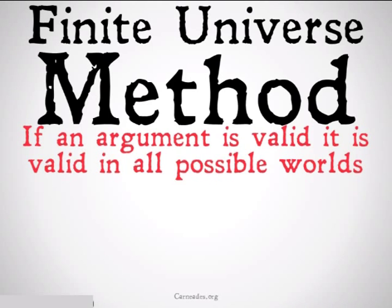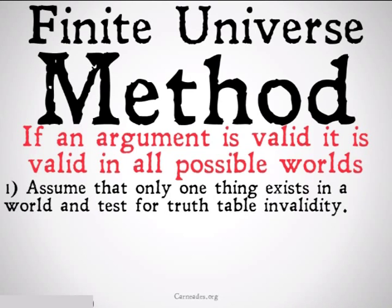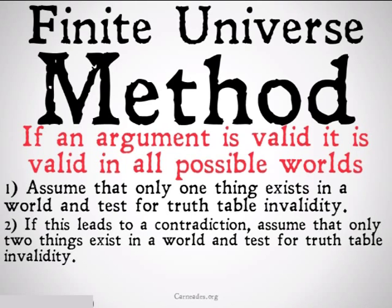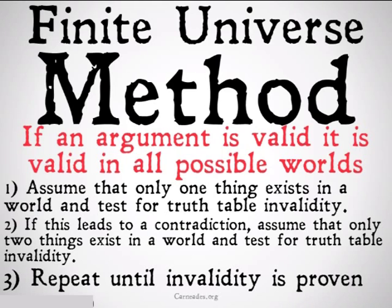The finite universe method is based on the idea that if an argument is valid, it's going to be valid in all possible worlds — so it would be valid in a world where there is only one thing. We assume that only one thing exists in a world and test for truth table invalidity. If this leads to a contradiction, we assume only two things exist and test again, repeating by adding more things to the world until invalidity is proven. You probably only want to try the finite universe method if you're pretty sure the argument is invalid, because otherwise you'll be doing this process over and over forever.